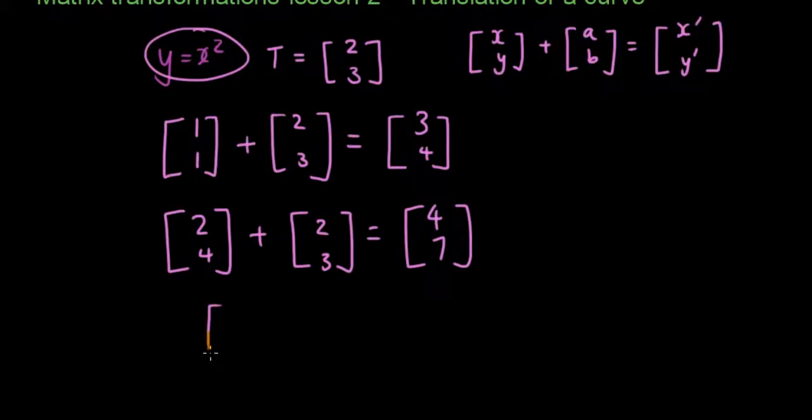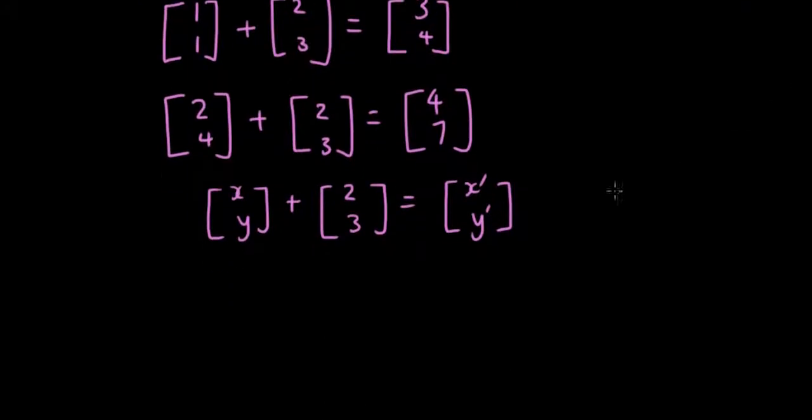So xy plus ab which is 2, 3 is equal to x' y'. Now what happens is, if I write out these 2 equations, I'm going to make xy the subject. You'll see why I'm doing that in a second.